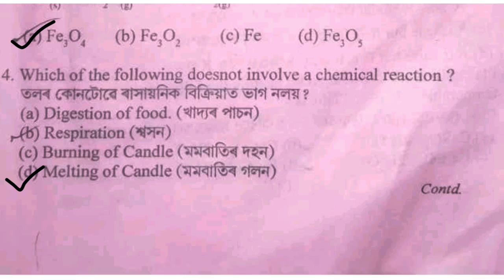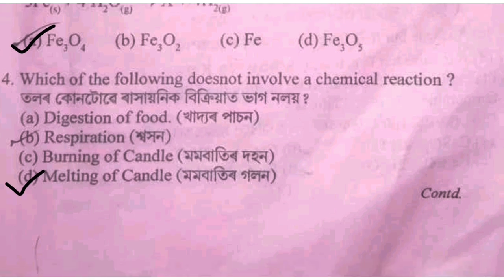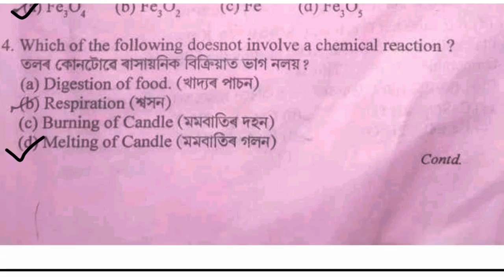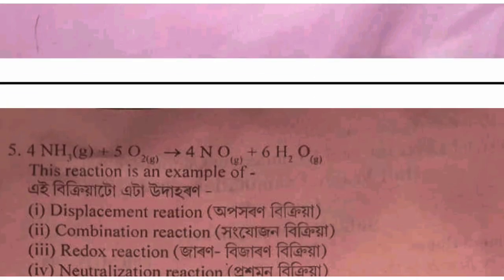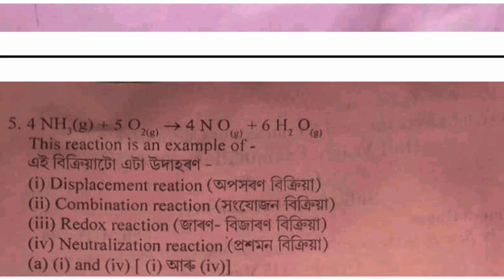The next question: 4NH3 plus 5O2 gives 4NO plus 6H2O. Options A, B are given for this chemical equation.